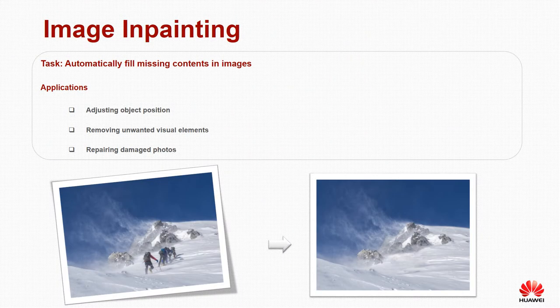Image inpainting is widely used in applications, including adjusting object position, removing unwanted visual elements, and repairing damaged photos.